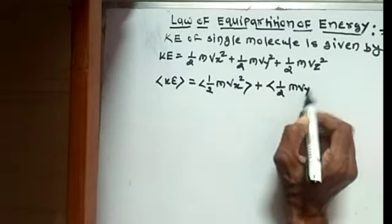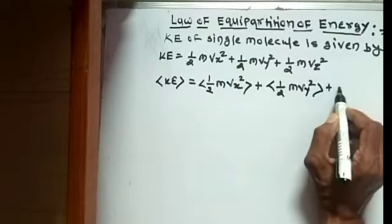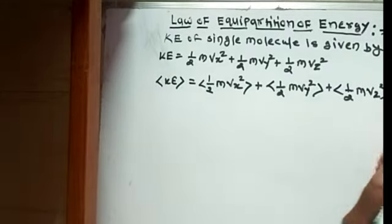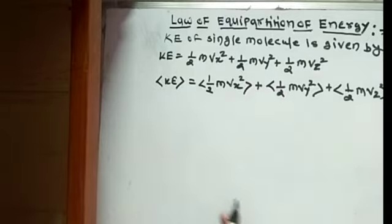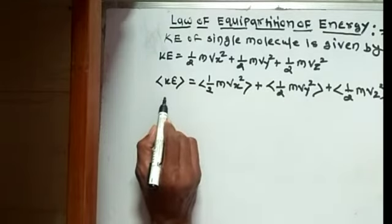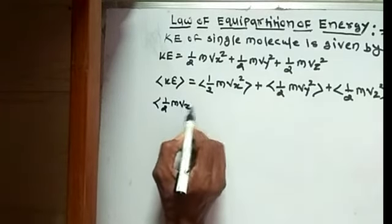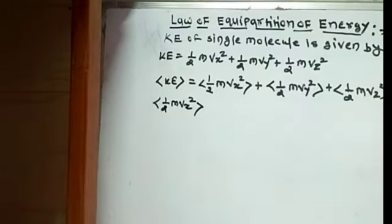For gas in thermal equilibrium at temperature T, the average energy is equal to 3 by 2 kBT. So we write angle bracket half m vx square plus angle bracket half m vy square plus angle bracket half m vz square.